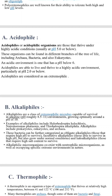Alkaliphiles are a class of extremophilic microorganisms capable of survival in alkaline pH, roughly 8.5 to 11, growing optimally around a pH of 10. Examples of alkaliphiles include Halorhodospira and Holochloris. These bacteria can be further categorized as obligate alkaliphiles, those that require high pH to survive, and facultative alkaliphiles, those able to survive in high pH but also grow under normal conditions.